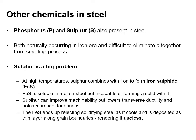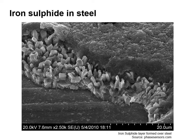Phosphorus and sulphur are also present in steel — both are naturally occurring in iron ore and difficult to eliminate altogether. Sulphur is quite a big problem. At high temperatures, sulphur combines with iron to form iron sulphide. Iron sulphide is soluble in molten steel but cannot form a solid with it when it cools. Sulphur can improve machinability but lowers transverse ductility and notched impact toughness. The iron sulphide ends up rejecting solidifying steel as it cools and is deposited as a thin layer along grain boundaries, rendering it useless. This electron microscope image shows the iron sulphide deposited on the surface of the steel.